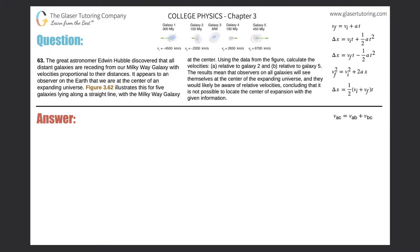Using the data from the figure, calculate the velocities: A, relative to galaxy 2, and B, relative to galaxy 5. Since we're doing relative velocities, I want to use this formula. We could probably think about it more intuitively, but I want to use the formula because when the problems become less intuitive, you want to fall back on this mathematical structure.